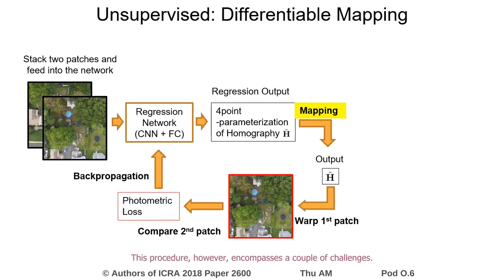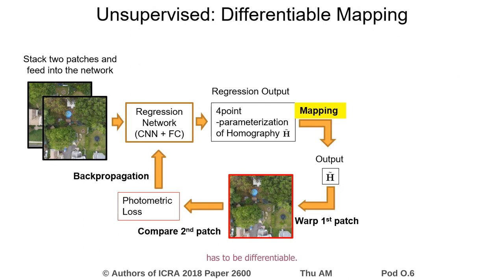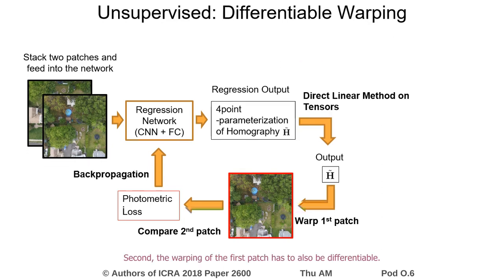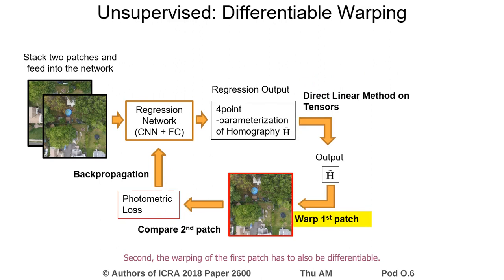This procedure, however, encompasses a couple of challenges. First, the mapping between the two homography representations has to be differentiable. To solve that, we use the direct linear method on tensors. Second, the warping of the first patch has to also be differentiable. To solve that, we make use of the spatial transformer layer.